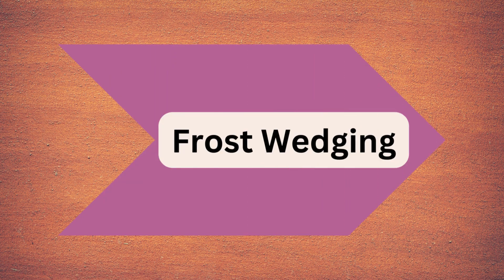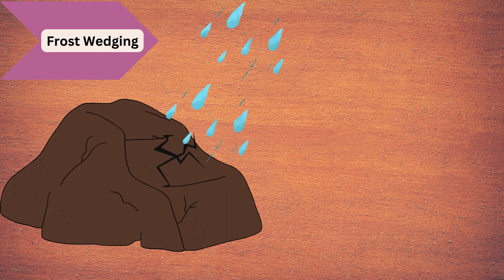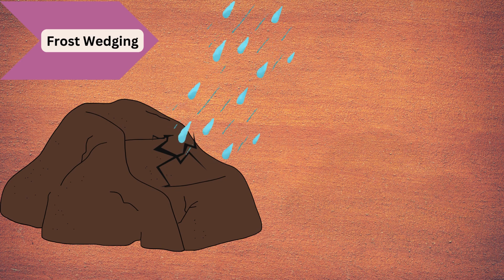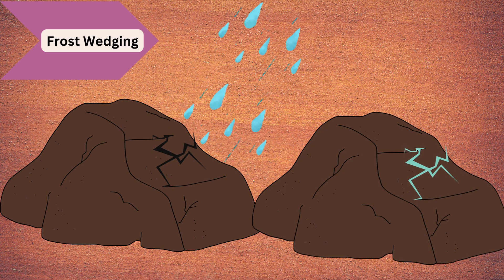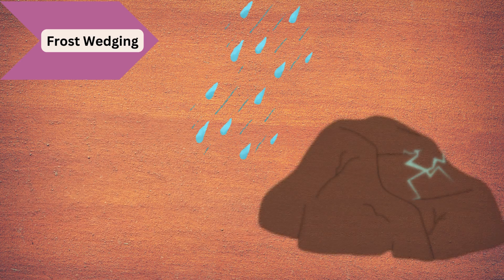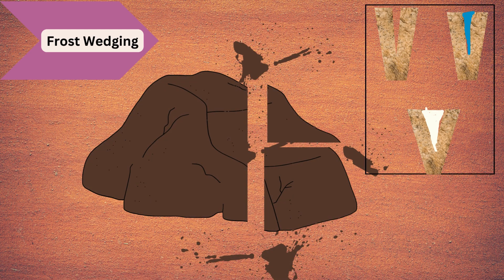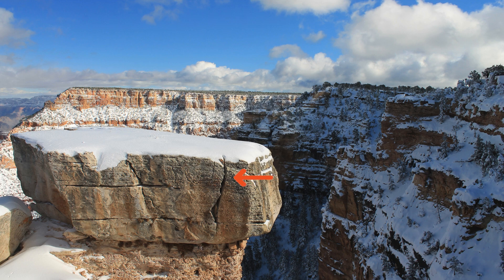The first type is frost wedging. Water enters into cracks in rocks, freezes, and then expands, causing the rocks to break apart. You can see the crack, water entering, then it freezes, expands, and forms frost. This is commonly seen in mountainous regions where temperature fluctuates around the freezing point, and the diagram points out the wedging pattern.